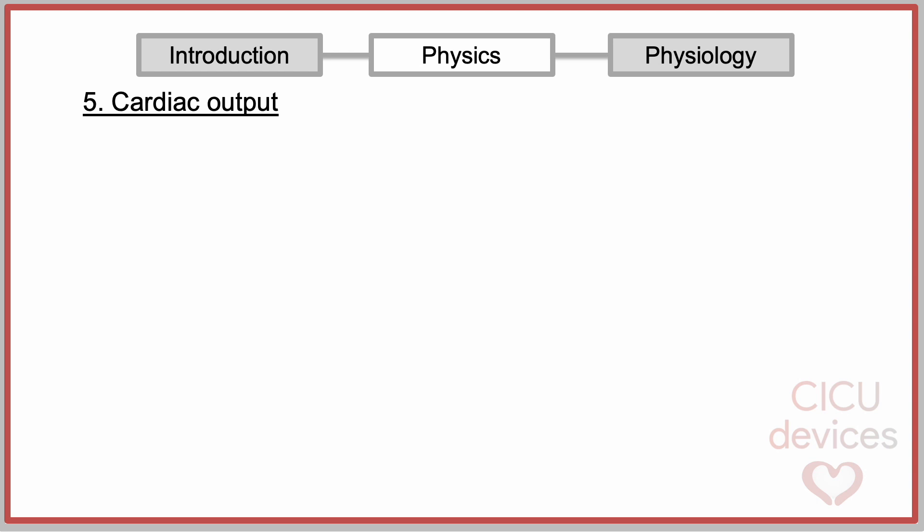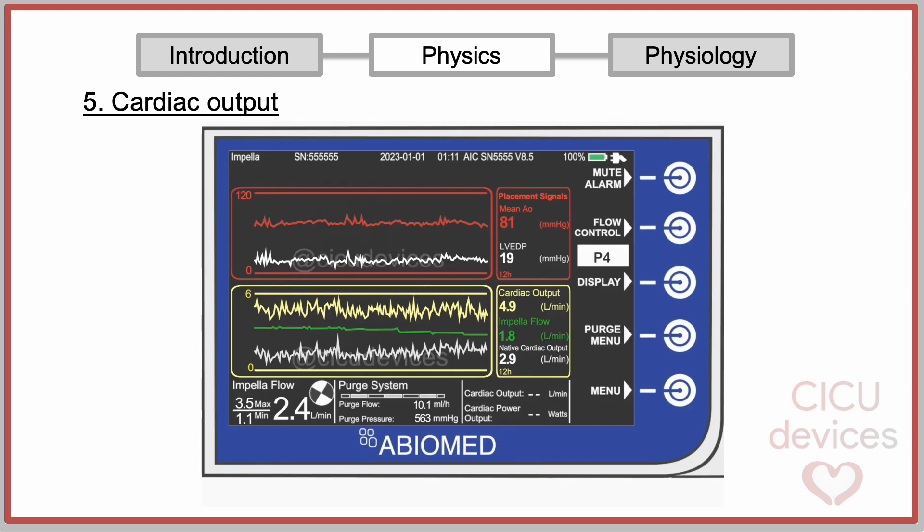Cardiac output. The Impella software can infer, based on an initial measurement, the evolution over the following hours of total cardiac output, native output, and cardiac power output.